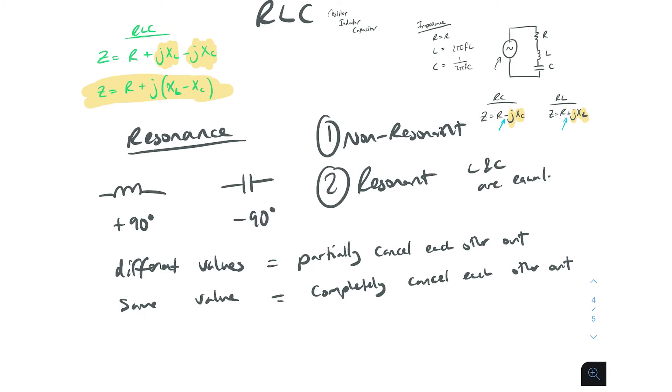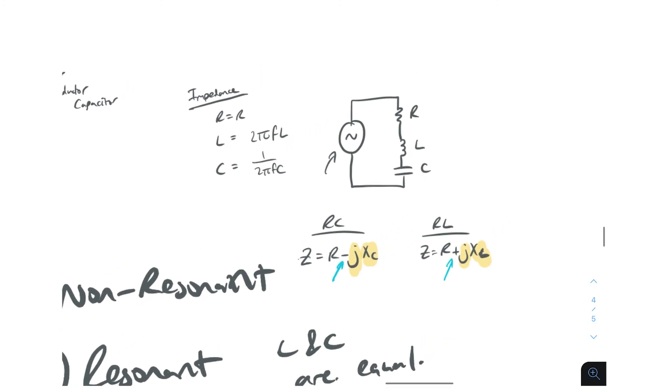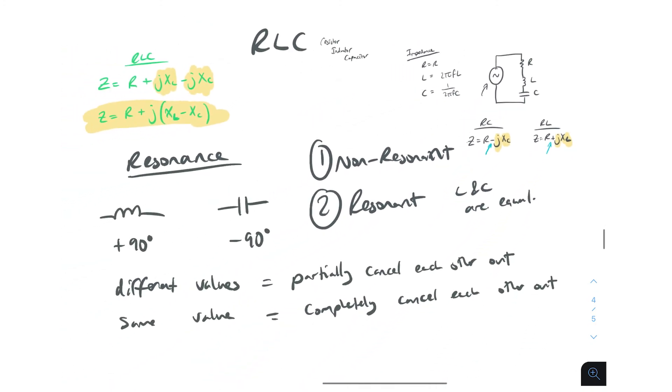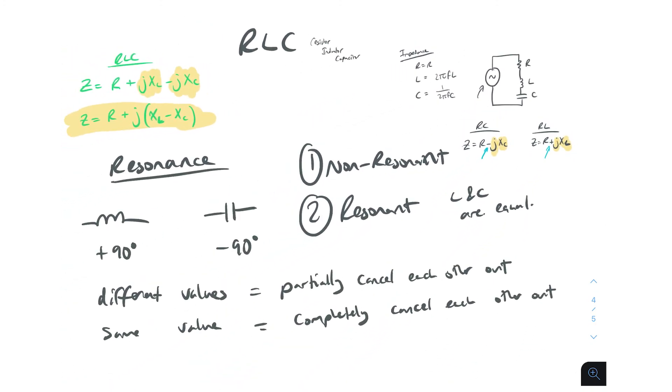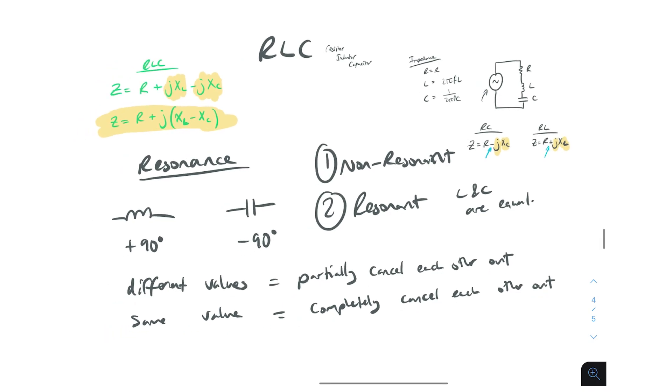So in the next video, we'll do an RLC example where we'll give this circuit over here some values. And then we will calculate voltage and current in the circuit and then also voltage across the resistor, the inductor and the capacitor. I'll see you guys in the next video.